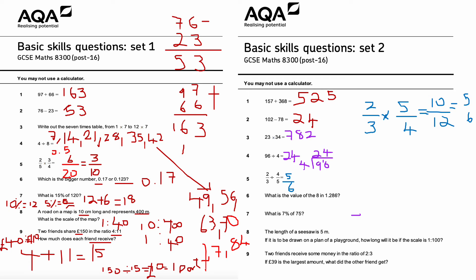Question number six: what is the value of 8 in 1.286? The value is eight hundredths. The units column, then tenths, then hundredths — the 8 sits in the hundredths column. So the answer is eight hundredths.